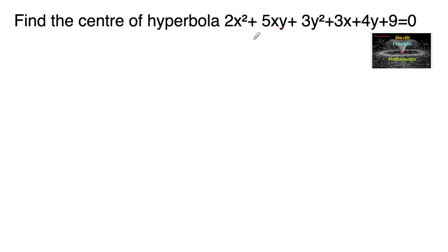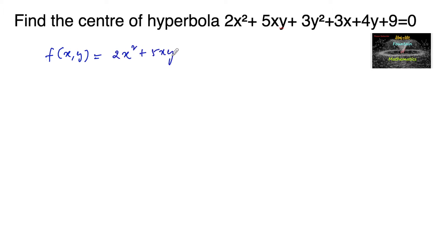Find the center of the hyperbola 2x² + 5xy + 3y² + 3x + 4y + 9 = 0. Generally, to find the center of a conic, we consider the expression f(x, y) = 2x² + 5xy + 3y² + 3x + 4y + 9, and we do partial differentiation with respect to x and with respect to y, and then by solving we get the center of the conic.